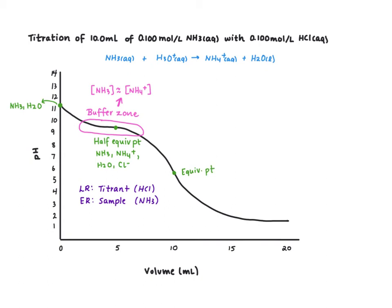At our equivalence point we're not going to have any of the reactants in this reaction left, so we'll just have ammonium, the product of that reaction. We'll have water and we'll have the spectator ion chloride. Really important: ammonium NH4+ is a weak acid.